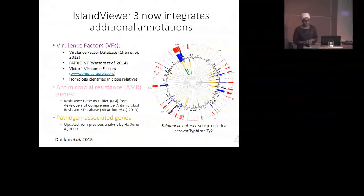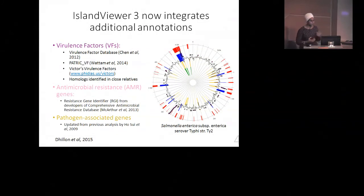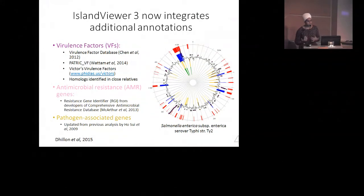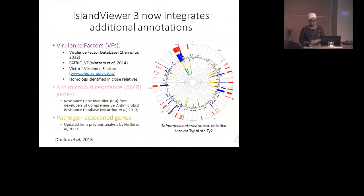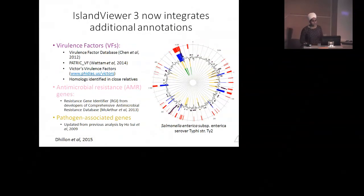We've also integrated additional annotations into Island Viewer. First, we've integrated virulence factors — curated annotations from major virulence factor databases. We've also developed our own pipeline to identify homologs of these genes in closely related genomes at the species or serovar level. We also integrate antimicrobial resistance genes identified using the resistance gene identifier from the CARD database developers. We also include pathogen-associated genes — genes only ever found in pathogen genomes — and these annotations appear as little circular glyphs on top of the genomic island predictions.